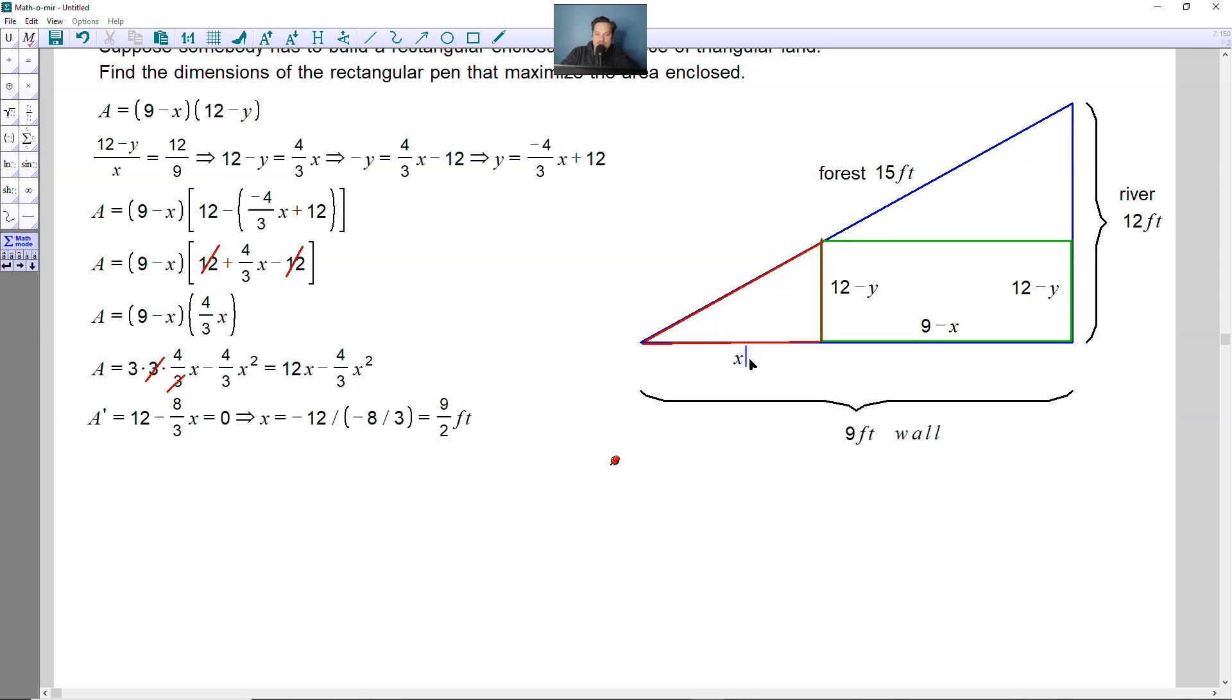So this tells you the value of x. Back in the picture, x therefore is equal to basically 4.5 feet - 9 divided by 2 is 4.5. So this is your x. Which means that 9 minus x would be the dimension across the bottom there. That would be 9 minus 4.5, which would also be 4.5 feet. So the enclosure has a base of 4.5 feet. Now you also have to find the height of the enclosure. Remember this equals 12-y, which means you've got to find y first.